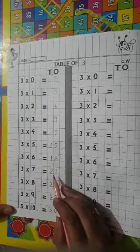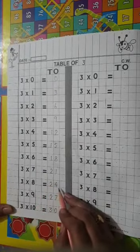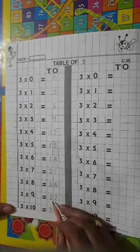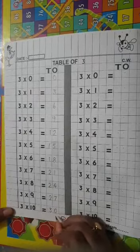3 7s are 21, 3 8s are 24, 3 9s are 27, 3 10s are 30.